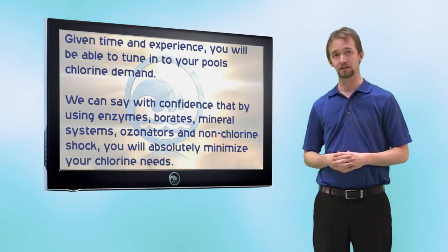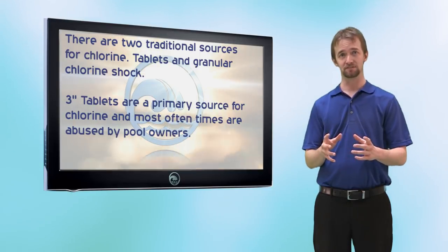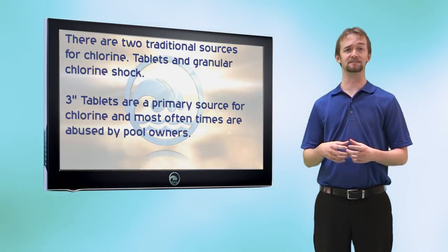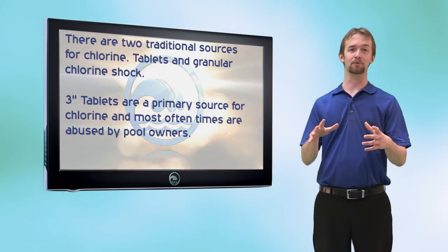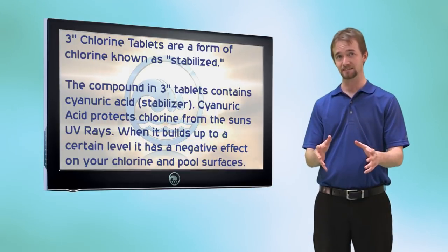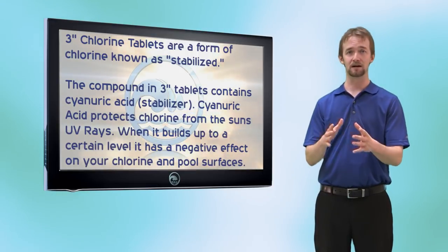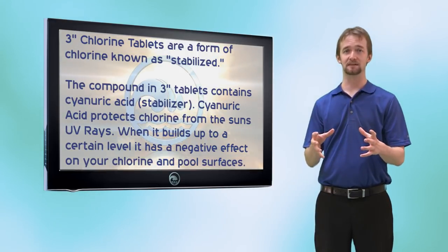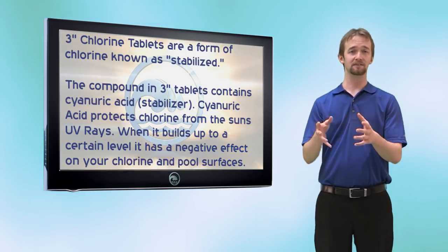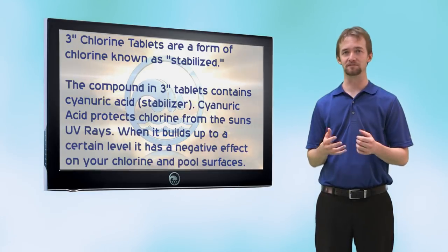Where does your chlorine come from? Your chlorine is going to come from two main sources. First, you have your three-inch chlorine tablets. A lot of people think they can just use as many three-inch tabs as they want — this simply isn't true. The chlorine compound inside tablets is called stabilized chlorine because it's assembled with cyanuric acid. Cyanuric acid is sunblock for your chlorine — it protects the chlorine from the UV rays of the sun.